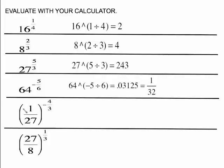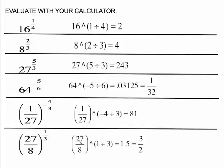Same thing here — we need two sets of parentheses. The 1 over 27 goes in parentheses, then caret, then parentheses for the negative 4 divided by 3, which gives 81. Similarly, 27/8 caret (1 divided by 3) gives the decimal 1.5, which is also the fraction 3/2.